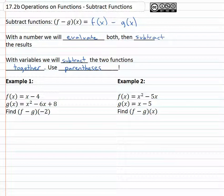For example, if we've got f(x) = x − 4 and g(x) = x² − 6x + 8, we're asked to find (f − g)(−2). What that's really asking us to do is find f(−2) and subtract whatever g(−2) is. So we need to find both of those.